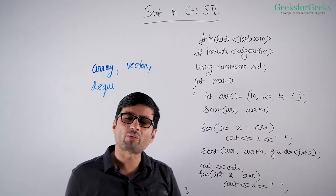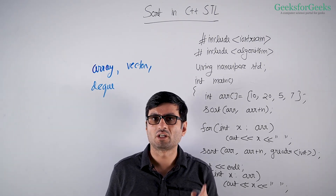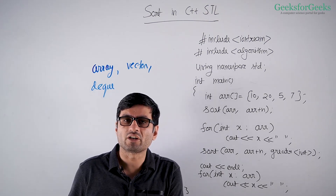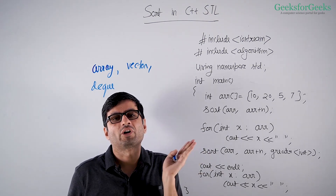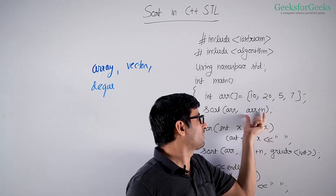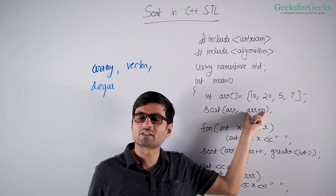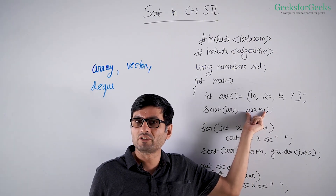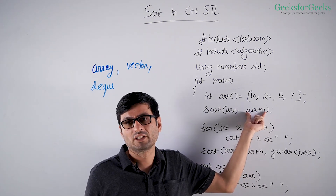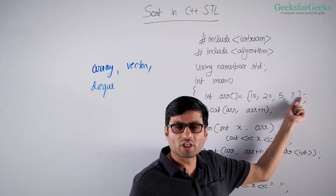For vectors and deque, the second iterator is v.end(), which gives you an iterator pointing to an element beyond the last element. That is why for arrays we do not pass array plus n minus one, because that gives the address of the last element. Instead we pass array plus n, which gives the address of an element beyond the last element.